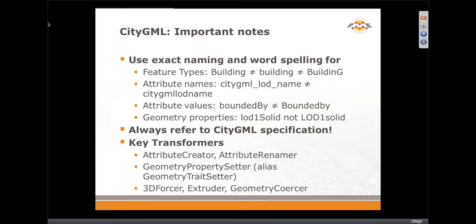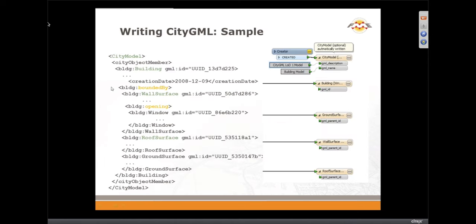The other key is making sure your IDs and parent IDs all correlate properly — your wall surfaces should have a CityGML parent ID that corresponds to the building it belongs to. You'll see the pattern of attribute setter followed by a geometry property setter repeating. We typically create the attribute and then set it on the geometry property setter. Just note that the name needs to be exact and is case sensitive. You're going to see a lot of attribute creators, property setters, 3D forcers, extruder, and geometry coercer — those keep coming up again and again.